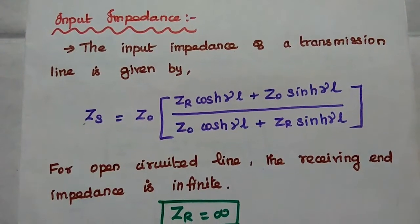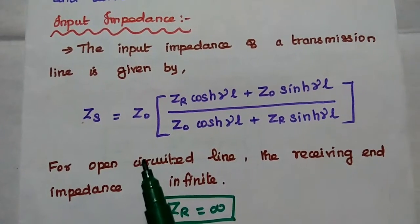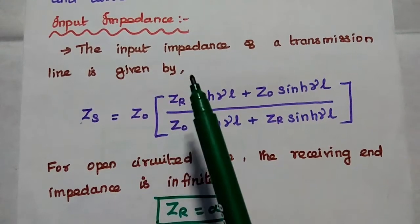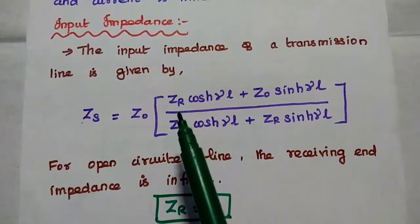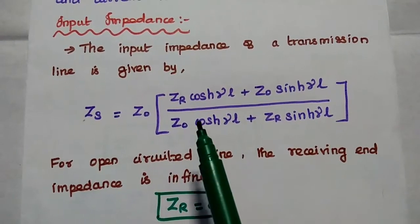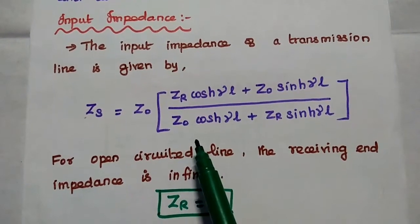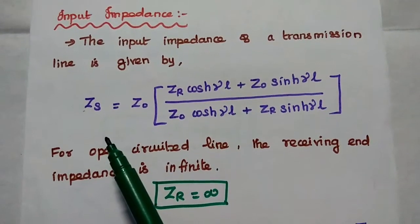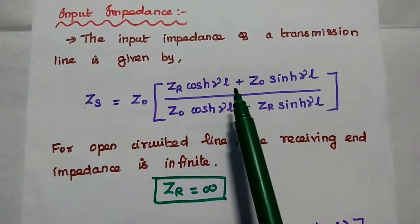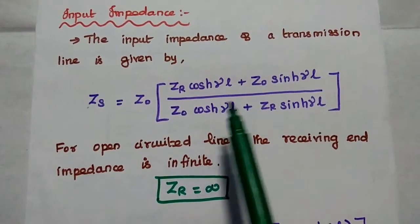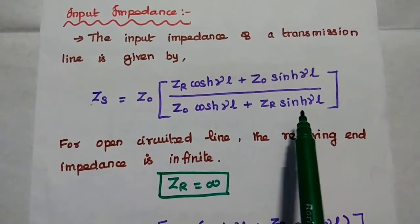Next, we are going to derive input impedance for this open circuited line. For that, we can consider the general equation of input impedance of a transmission line. We have already derived this expression in the previous lecture video. You can refer that video for better understanding. For this open circuited line, we can directly use this input impedance formula. So, Zs is equal to Z0 into ZR·cosh(γL) plus Z0·sinh(γL), divided by Z0·cosh(γL) plus ZR·sinh(γL).